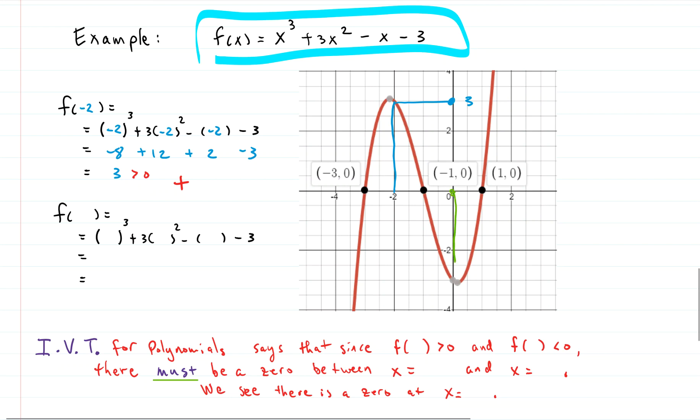Let's choose another value. Let's choose x equals zero. So right here, we shoot that down. What is that value? It actually looks like it's about negative 3. So let's see. If we put in zero here, let's see what we get back. That means we get zero cubed, which is zero. Zero squared times 3 is zero. Minus zero is zero. So we get negative 3, which is negative. So we have a negative.